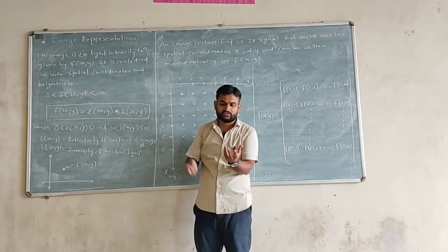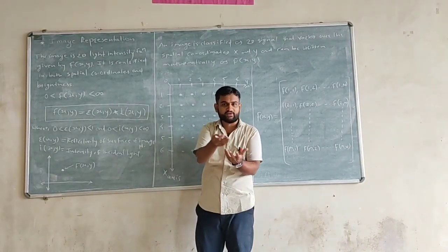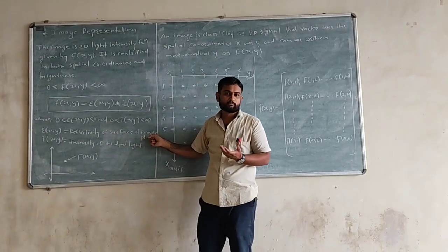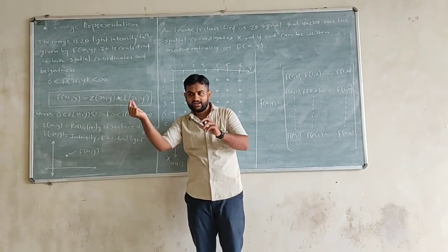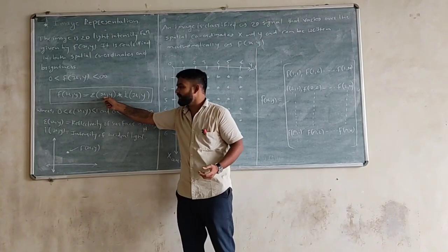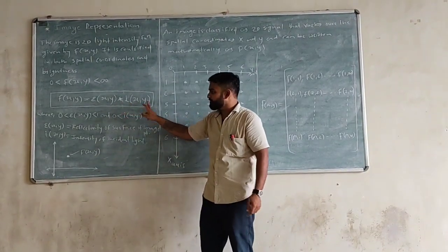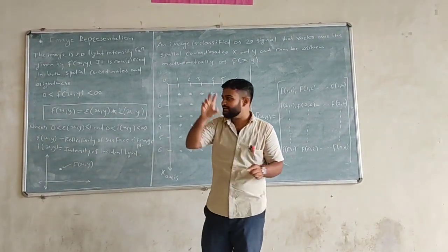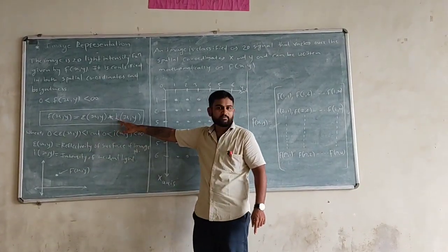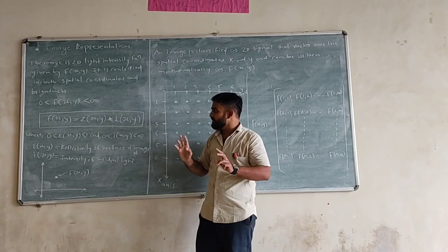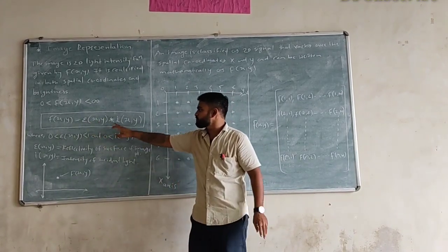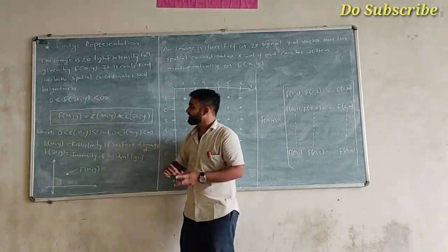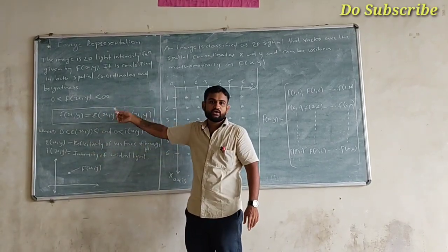We are going to discuss reflectivity in detail in further videos, but here you just have to understand it is the reflectivity of a surface of an image point. Consider any image point or pixel — its reflectivity is represented by r(x, y), where i(x, y) represents the intensity of the incident light. Whatever light is incident on that point, its intensity is represented by i(x, y). So when we multiply r(x, y) into i(x, y), we ultimately get the image function f(x, y) — the mathematical representation of your image.